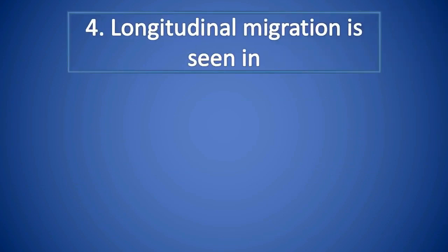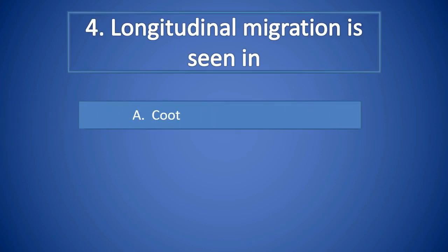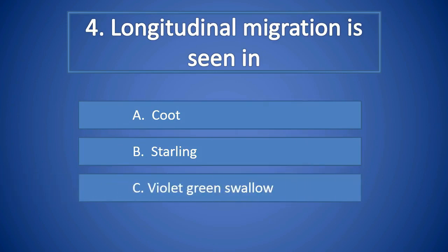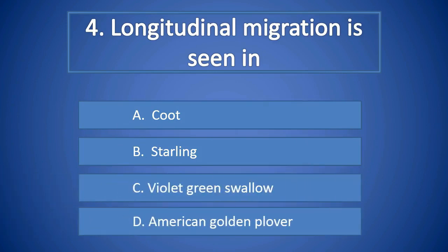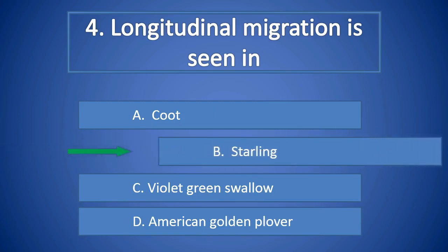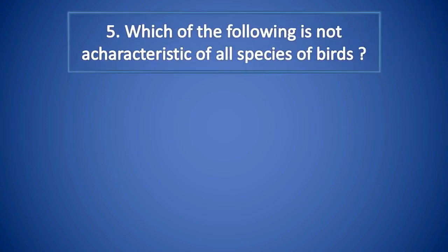Question Number 4: Longitudinal migration is seen in A. Coot, B. Starling, C. Violet green swallow, D. American golden plover. Right answer is B. Starling.